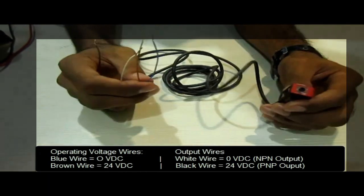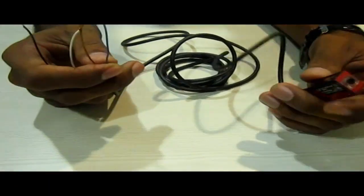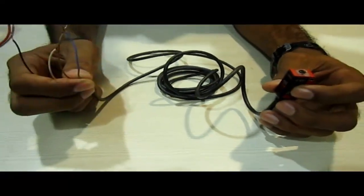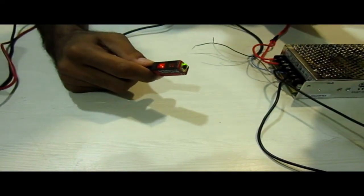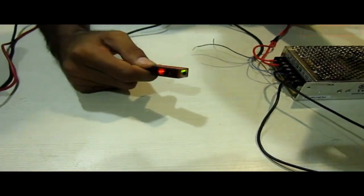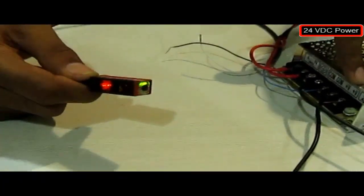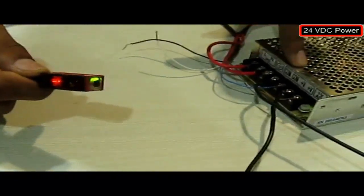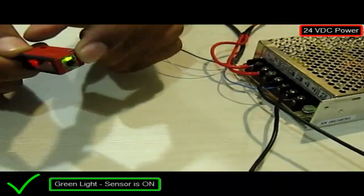Now I am going to connect this sensor with the power supply and indicator to indicate the presence of any object. Now I have wired up this sensor. You can see here I have connected the brown wire to 24 volt and the blue wire to the 0 volt. This light indicates that sensor is on.